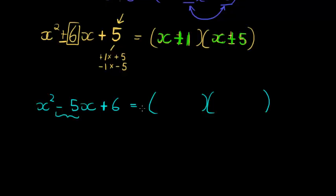This one must get me a negative 5. So, it's going to have to be two negatives. Because two positives will never be able to add up to a negative number. So, it will be x minus something and x minus something. I have to get 6. It can be 1 times 6 or it can be 2 times 3.